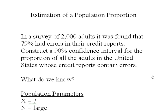Estimation of a Population Proportion. In a survey of 2,000 adults, it was found that 79% had errors in their credit reports. Construct a 90% confidence interval for the proportion of all adults in the United States whose credit reports contain errors.